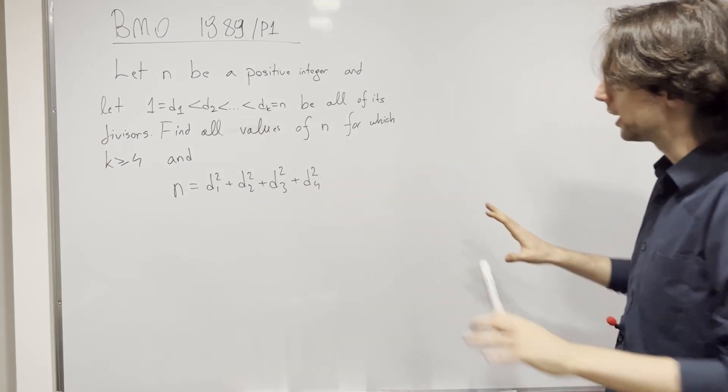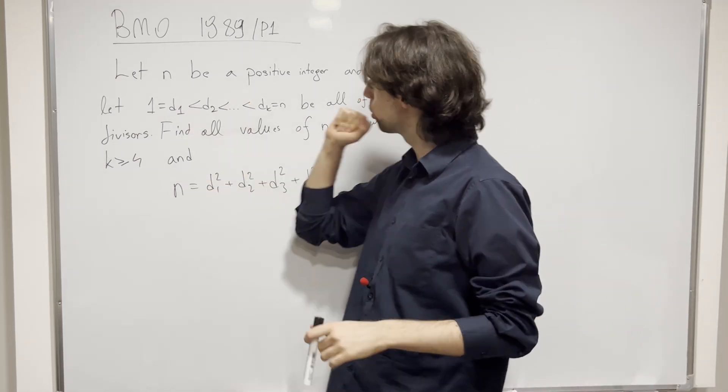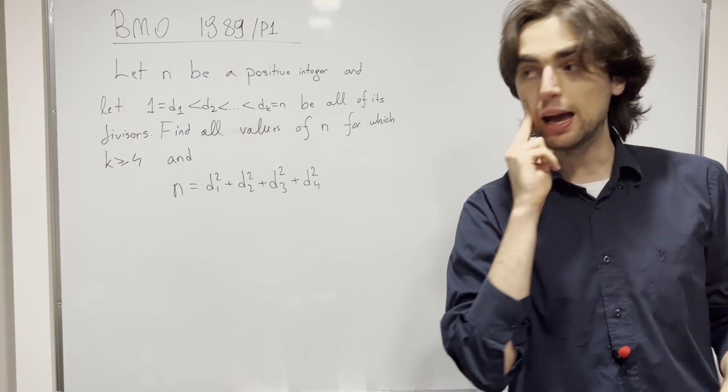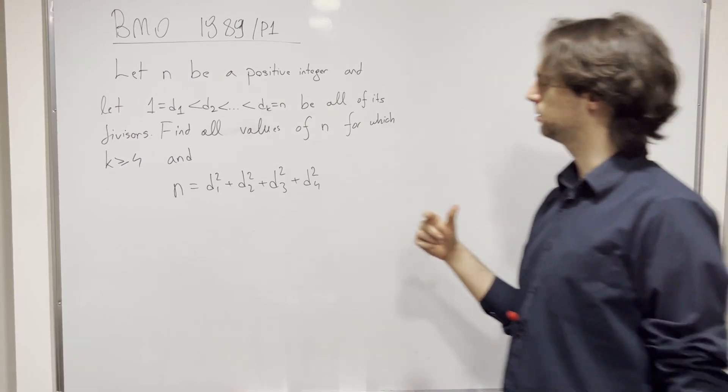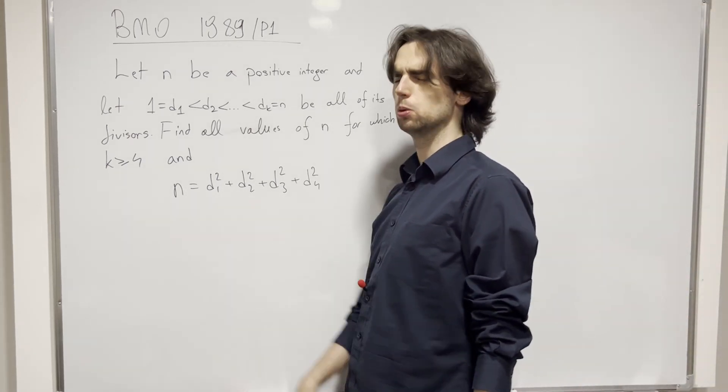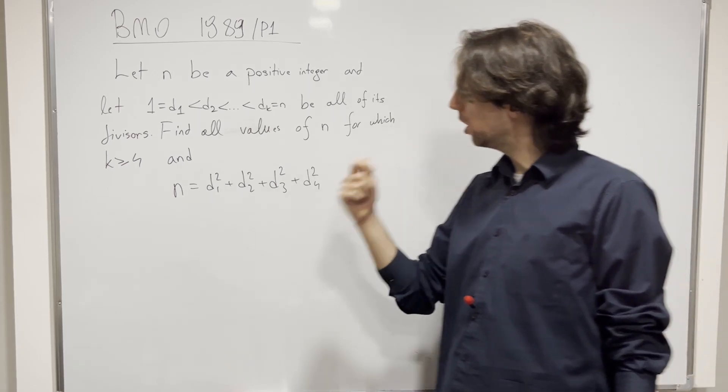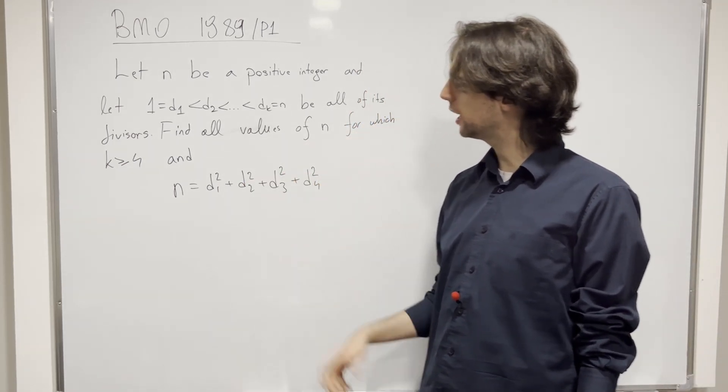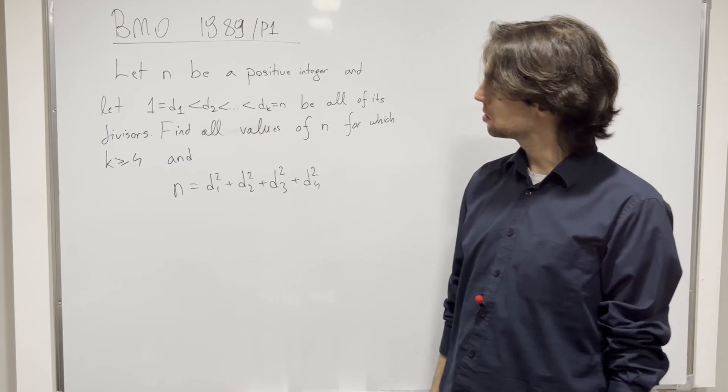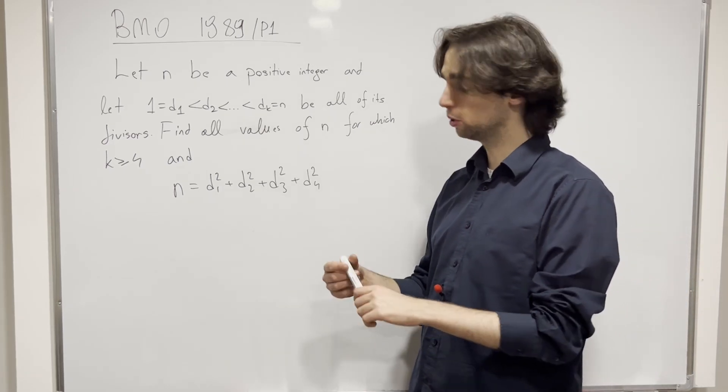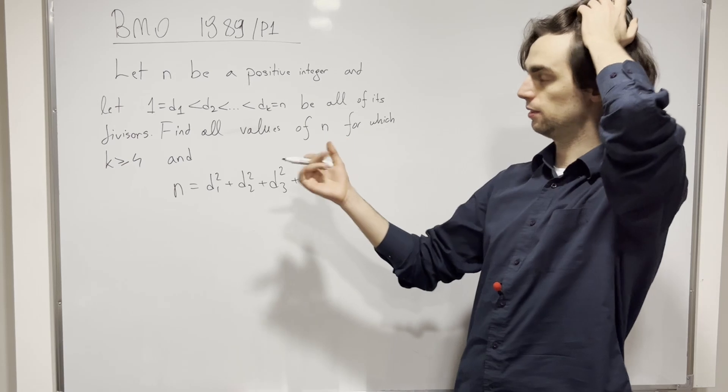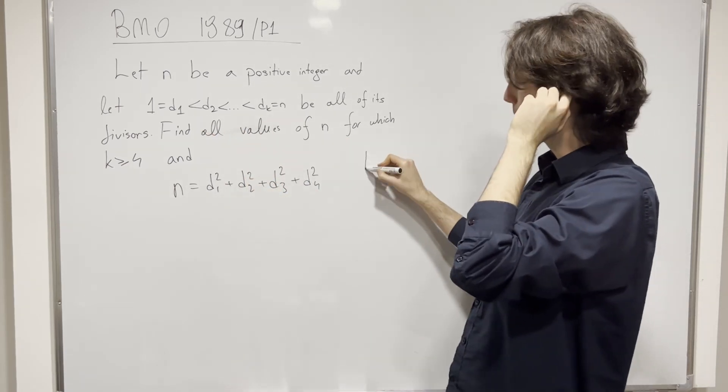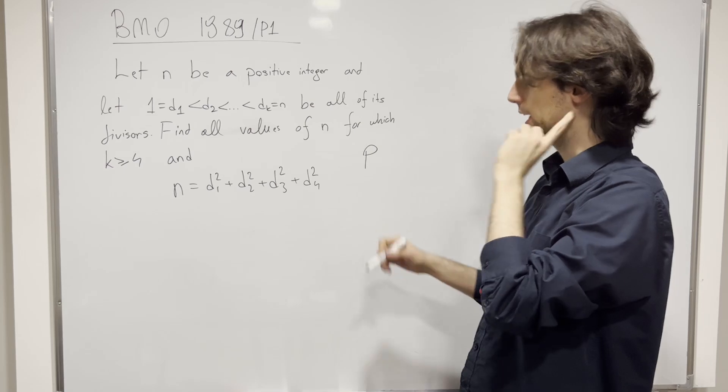And for me, the thing is, okay, so these are all of its divisors ordered, and it needs to have at least 4 divisors, and some of the squares of these divisors needs to be equaled. We have a 1 here, not all of these divisors can be the same. I'm thinking if the smallest prime, like number that divides n, and such a thing exists, if that is p, then d2 is p.